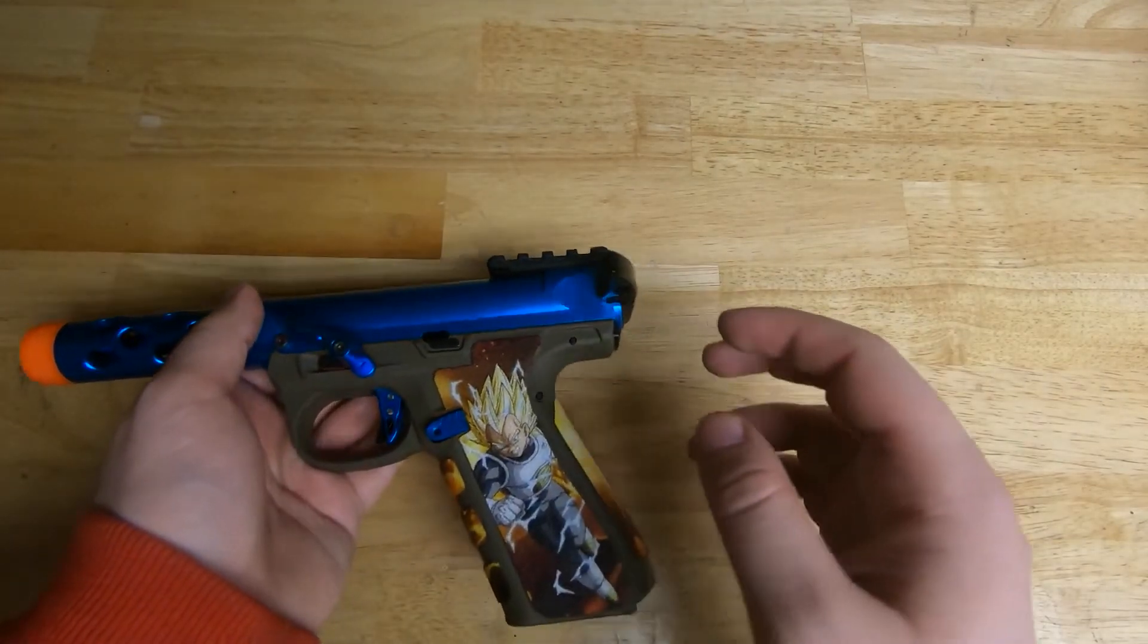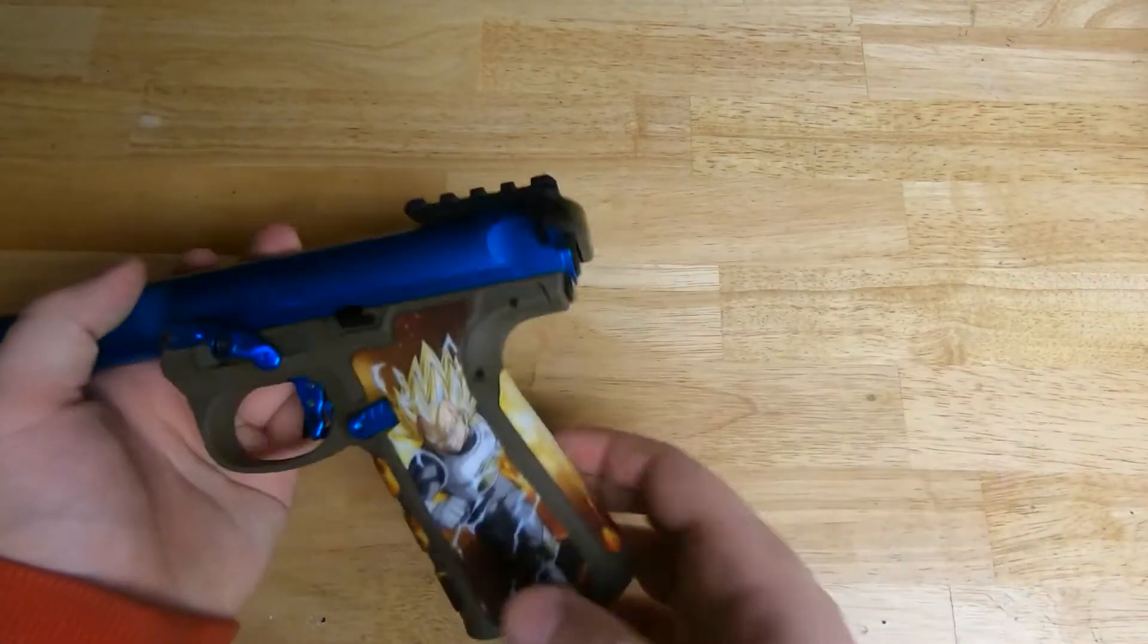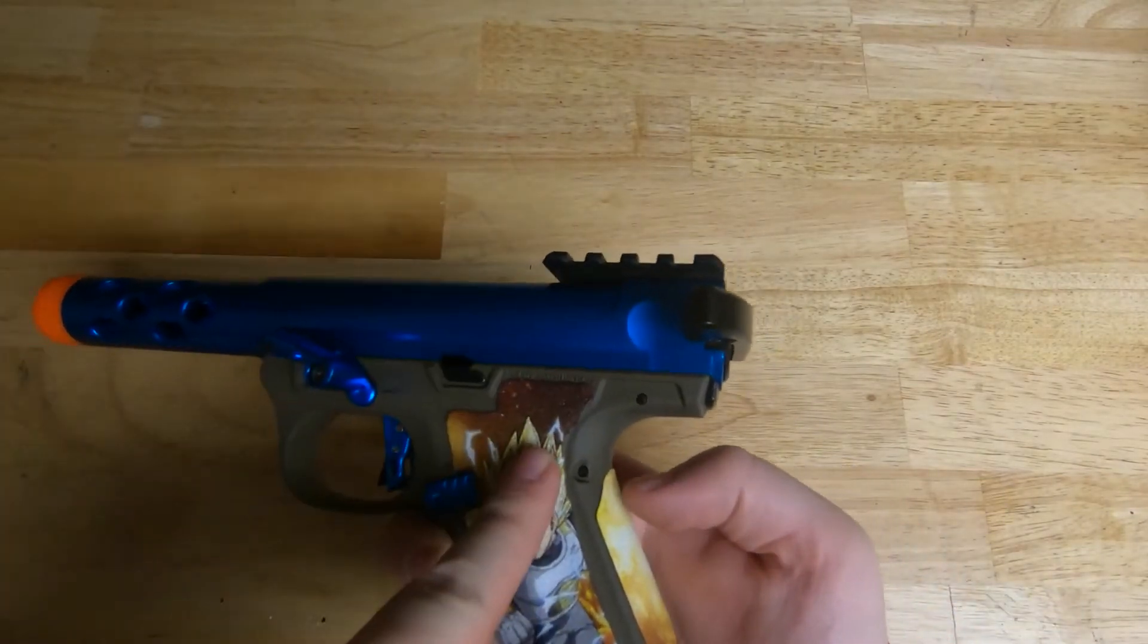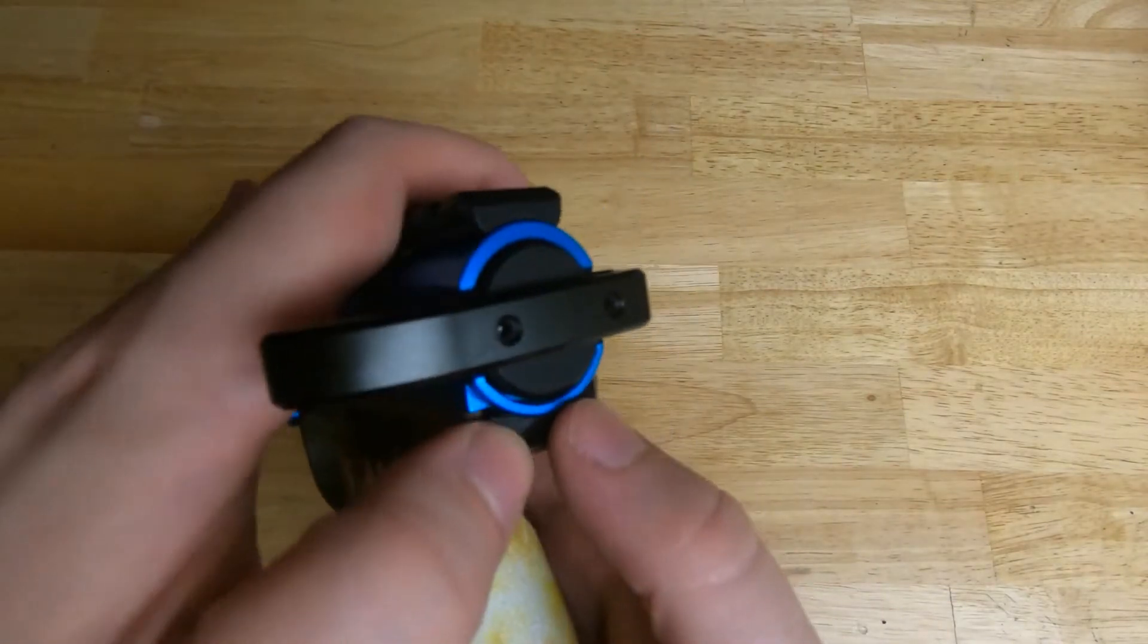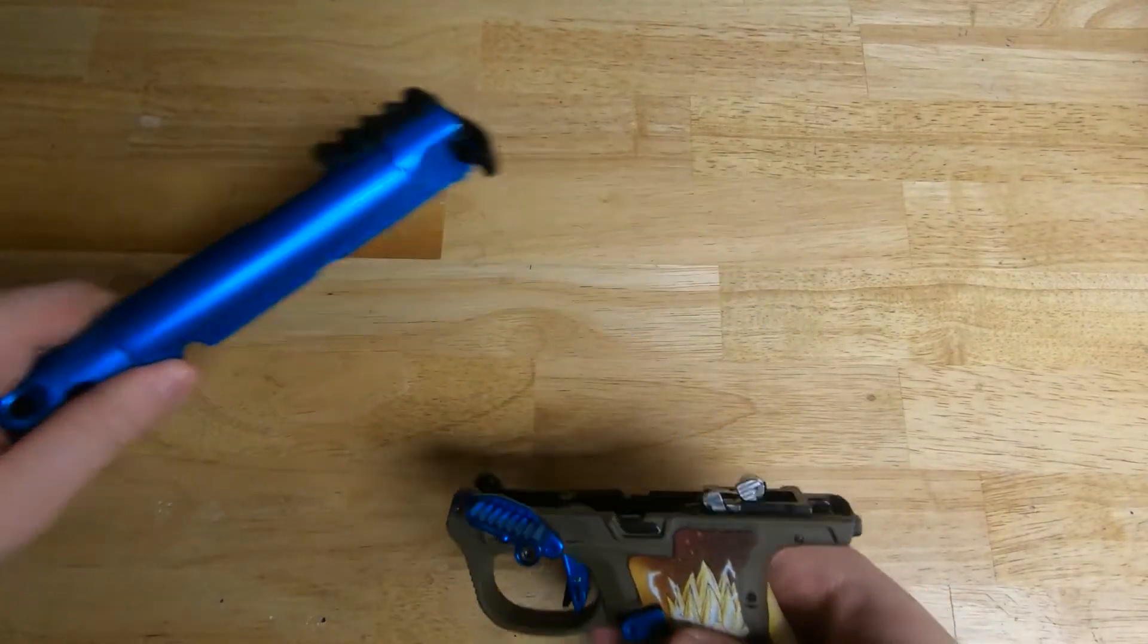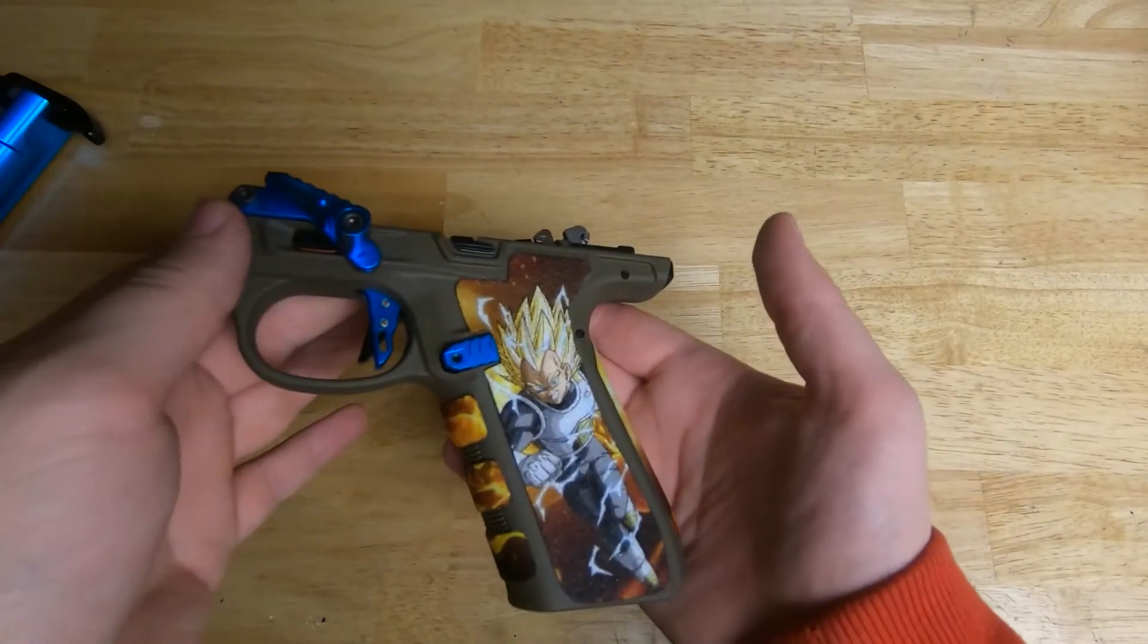You need to make sure there's nothing in the gun, obviously, and then you need to rack the gun, pull the trigger, and you're going to remove the upper from the lower. You just press that button and it'll pop up, and then you can remove the upper from the lower.